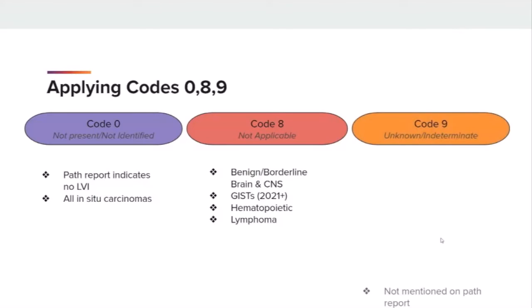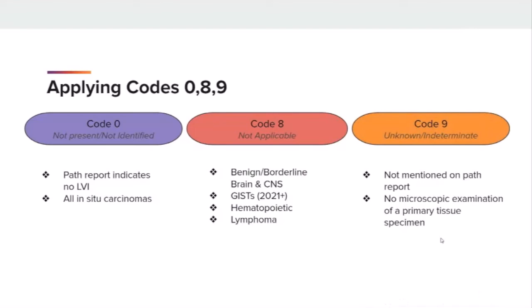Code 9, unknown or indeterminate, is used when LVI is not documented on the pathology report, there is no microscopic tissue examination from the primary site, the primary site specimen is cytology only, and in cases where the primary site is unknown.